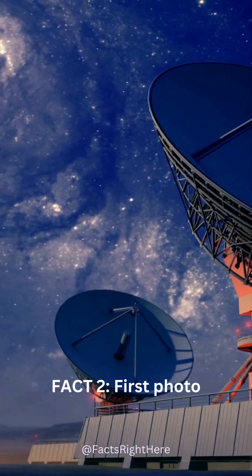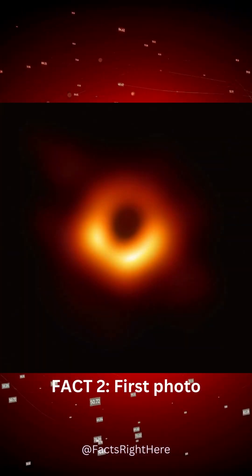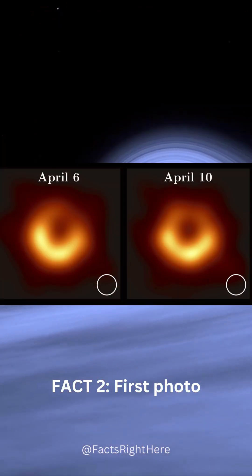In 2019, scientists captured the first-ever image of a black hole. The Event Horizon Telescope snapped a photo of the supermassive black hole at the center of galaxy M87.